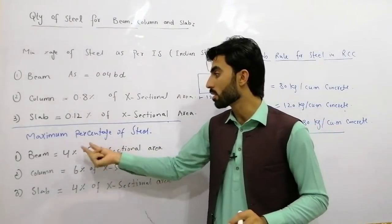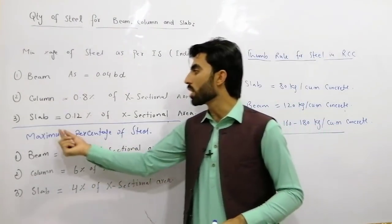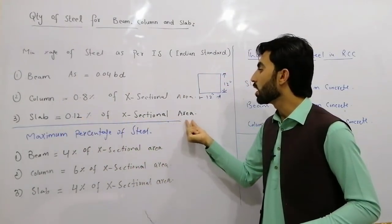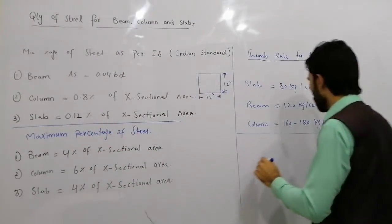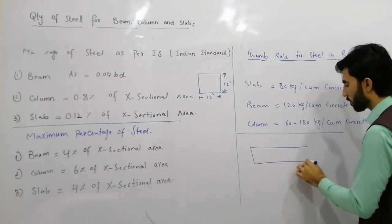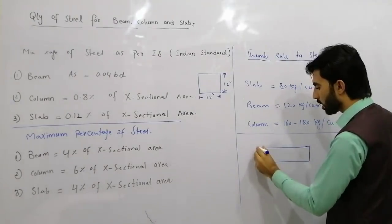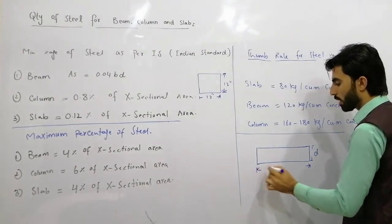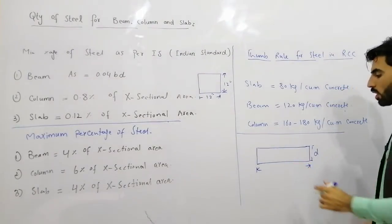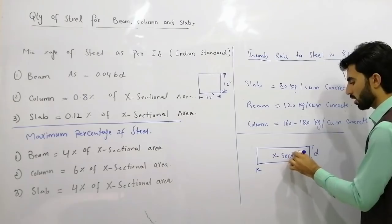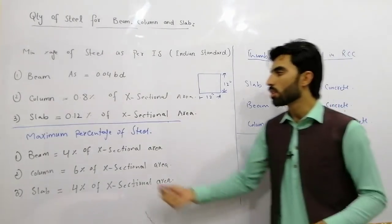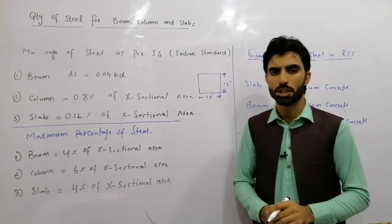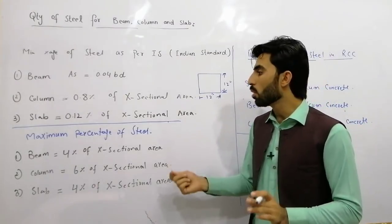For slab, the minimum percentage of steel is 0.12% of the cross-sectional area. Suppose you have a slab — first find the cross-sectional area using the depth and breadth of the slab, then multiply by 0.12%. This gives you the minimum quantity of steel for an RCC slab.